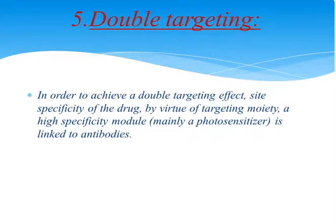Then is double targeting. In order to achieve a double targeting effect, a high specificity module is linked to antibodies by virtue of targeting moiety. Two mechanisms are used to target the drug — in this case, a photosensitizer and antibodies are both used. Mu and co-workers in 1983 used this technique and reported hematoporphyrin anti-M1 antibody conjugate for the suppression of tumor following incandescent light exposure. That is why it is known as double targeting.